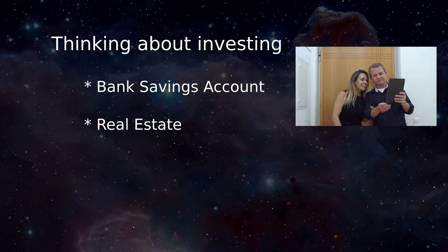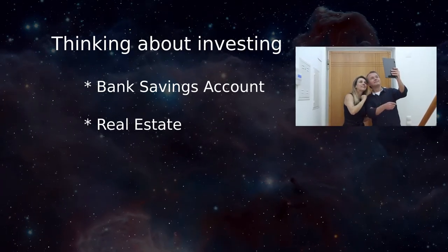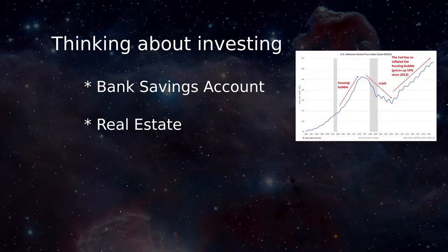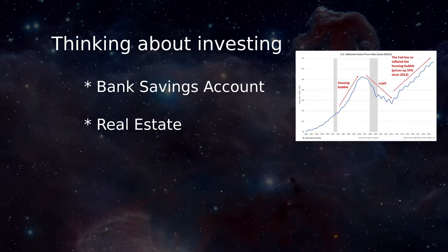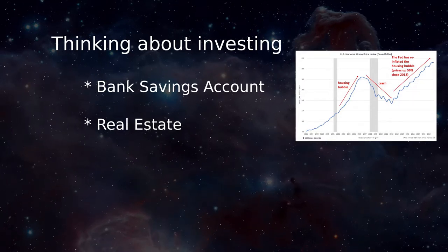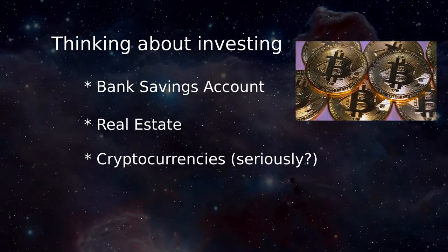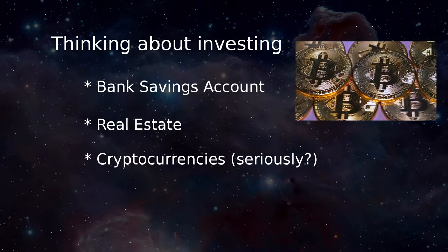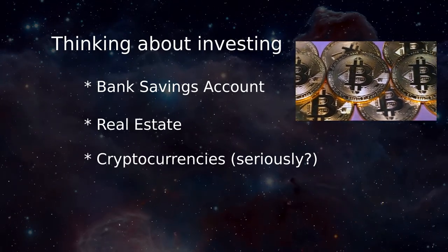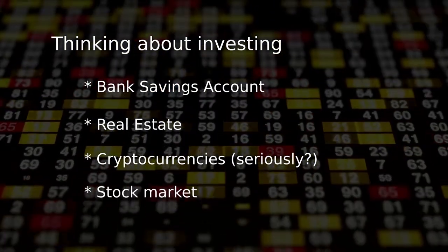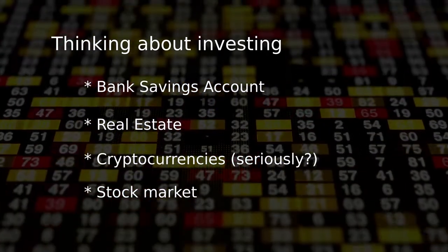Real estate might seem attractive, but there are some serious drawbacks not obvious at first glance. Remember that the 2008 economic meltdown was triggered by a wave of subprime mortgage defaults on properties that, because of the mortgage crisis itself, suddenly had less value than the cost of their loans. Cryptocurrencies are another non-starter — they're much too volatile, and some will argue they're not real money anyway. Given the alternatives, the stock market is a good choice, as long as you know how to get in without being taken in.